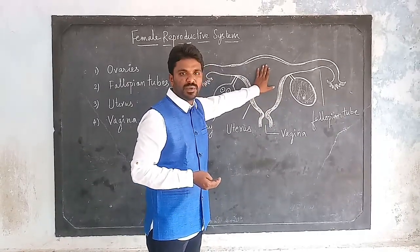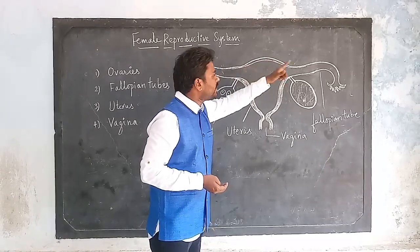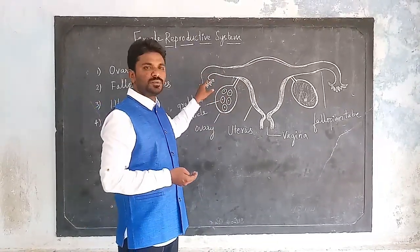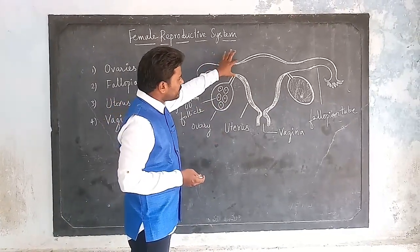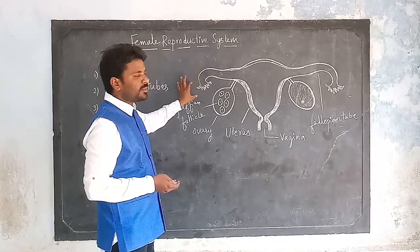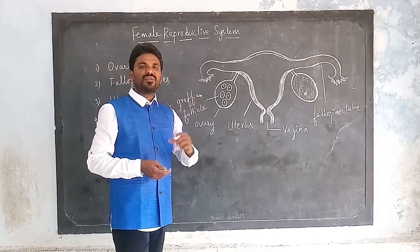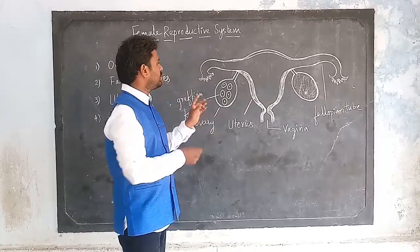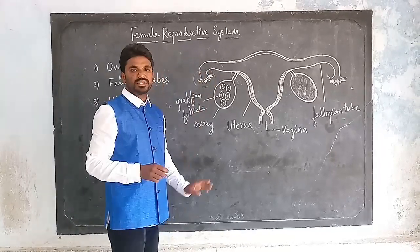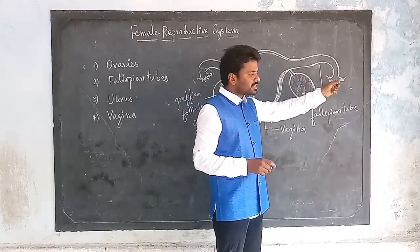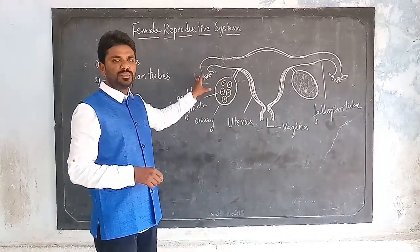Next, fallopian tubes. One pair of fallopian tubes are present on either side of the uterus, which is the center part of the female reproductive system. These fallopian tubes are also called oviducts. They extend into the body cavity, and the end of each fallopian tube has a broader funnel-like opening.